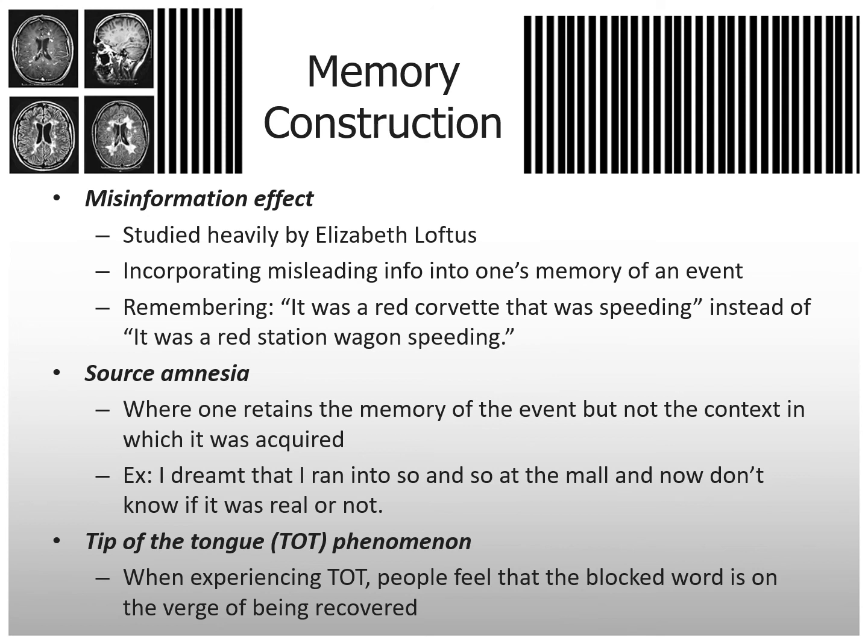Source amnesia is when one retains the memory of an event but not the context in which it was acquired. For example, you dreamed you ran into someone at the mall, and now you don't know if it was real or not. You might ask someone, 'Did I have that conversation with you?' because you know you did in your mind, you just don't know if it happened in reality.